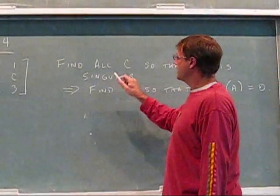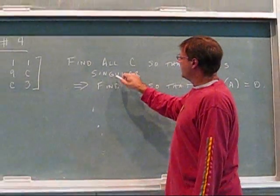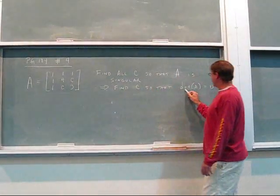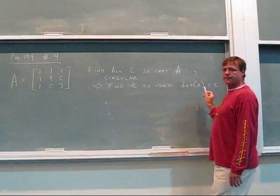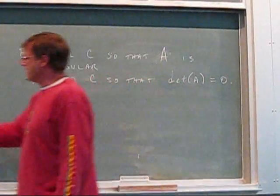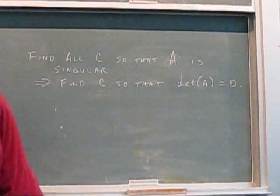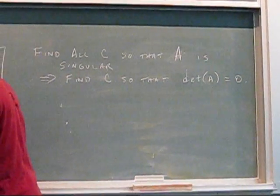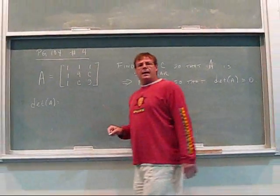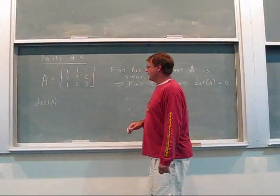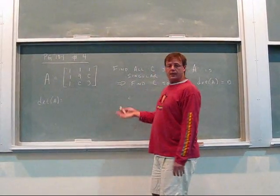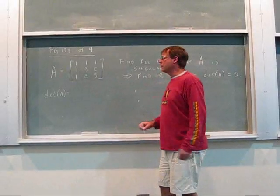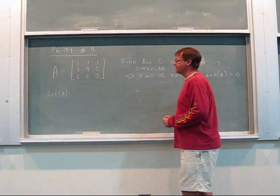We know that singular is equivalent to the determinant being zero. So the goal of the problem is to calculate the determinant of A, set it equal to zero, and then find out what values of C would make that true.